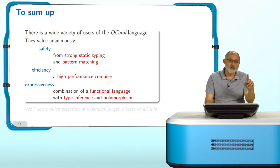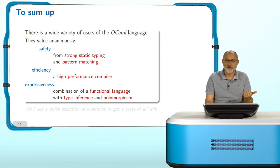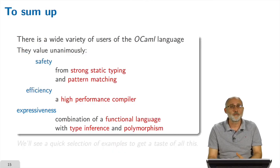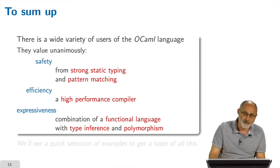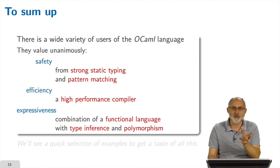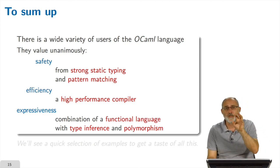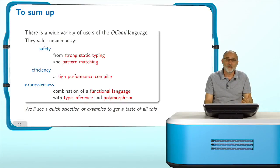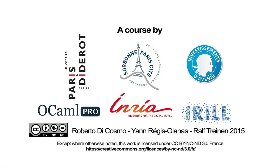If you look at all these quotations, you will see that all these people unanimously value the safety brought by strong static typing and pattern matching, the efficiency of a high-performance compiler — you don't want a safe programming language with slow programs, you also want fast programs — and expressiveness. This is really the magic triangle we have seen in the previous sequence: a functional language with type inference, polymorphism, and abstract data types. We'll see a quick selection of examples to get a taste of all this later on. We'll see you next time.